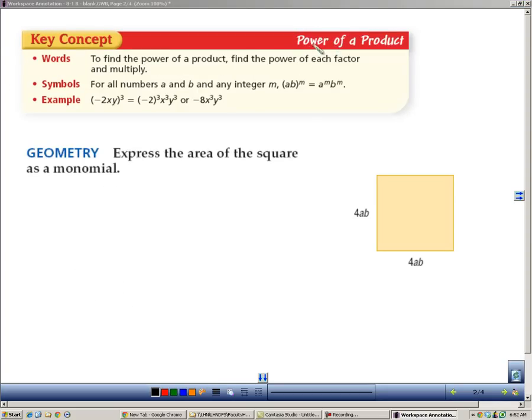Here's another exponent rule. It's called the power of a product. That means when you find the power of a product, then you find the power of each factor and multiply. Another way of saying that is if you have something that's being multiplied in parentheses and you have an exponent outside, you can even treat this like a distributive property. The m has to be distributed to the exponent of all the factors inside.